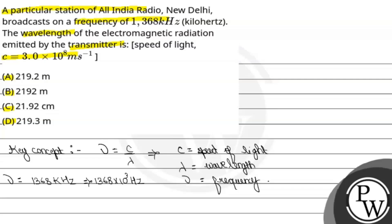We substitute into the formula: λ = c/ν = (3 × 10^8)/(1368 × 10^3) = 219.3 meters. So the correct option is (D) 219.3 m. Hope you understood it well, best of luck!